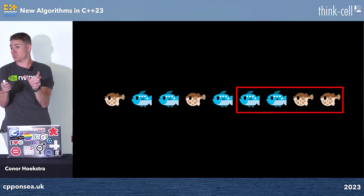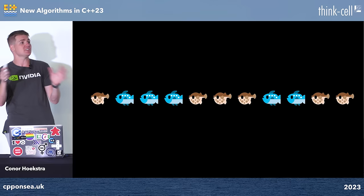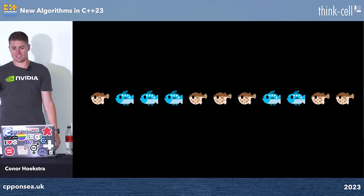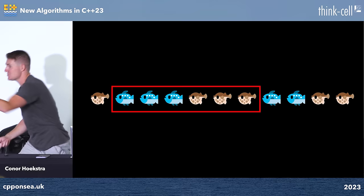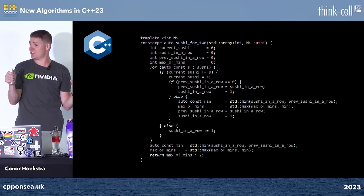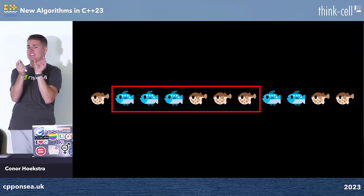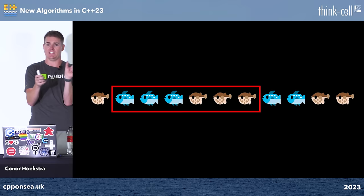One more example to confirm understanding: the answer is 6 — three fish of one type followed by three of the other. A clarifying question: can you pick three here and three somewhere else? No — the whole selected region must be contiguous. Can you include a segment that alternates tuna-puffer-tuna? No — it must be strictly partitioned into one type then the other.